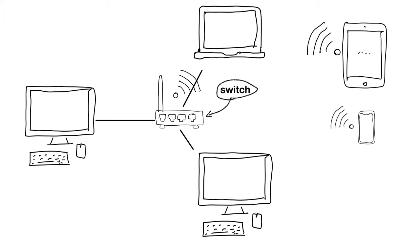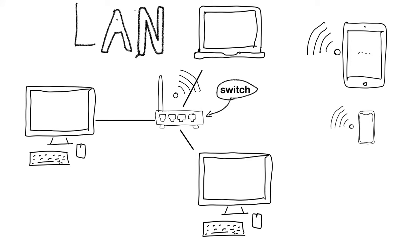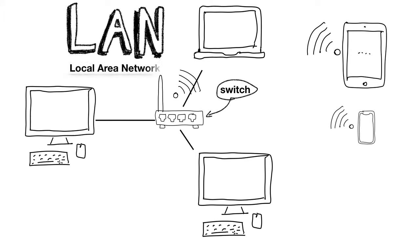This type of network is called a LAN, a Local Area Network. It's local because all the devices are close to one another — for instance, your home network, the network at your school, or the network in a business.